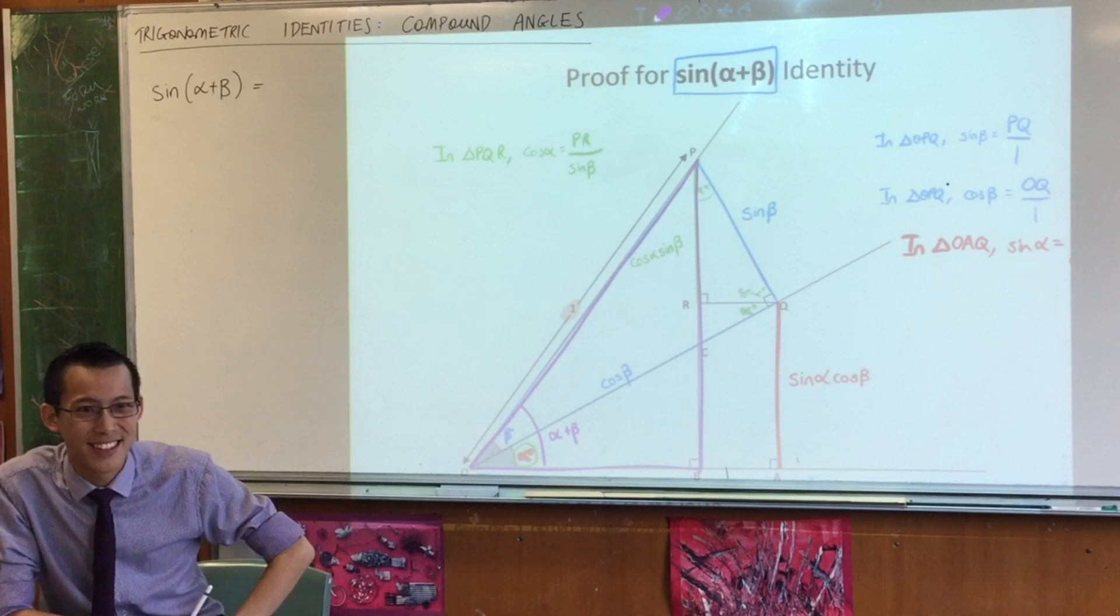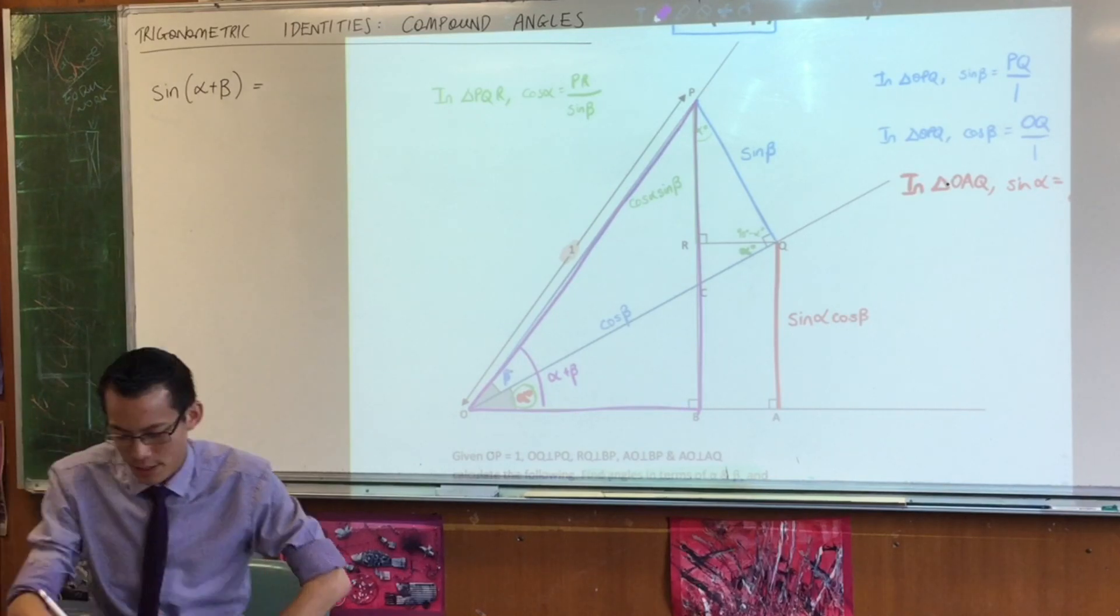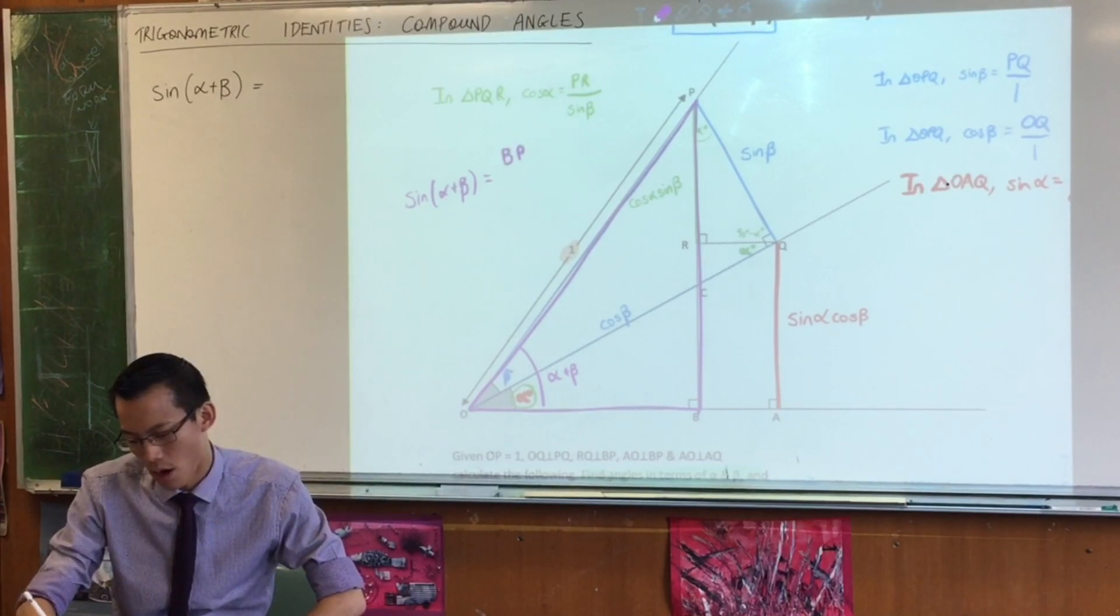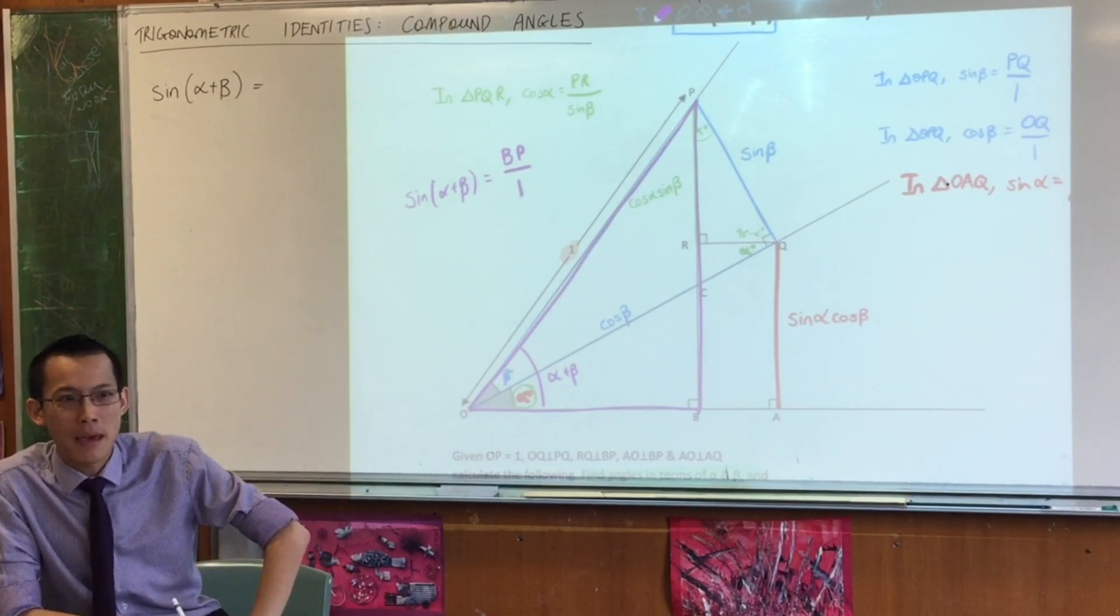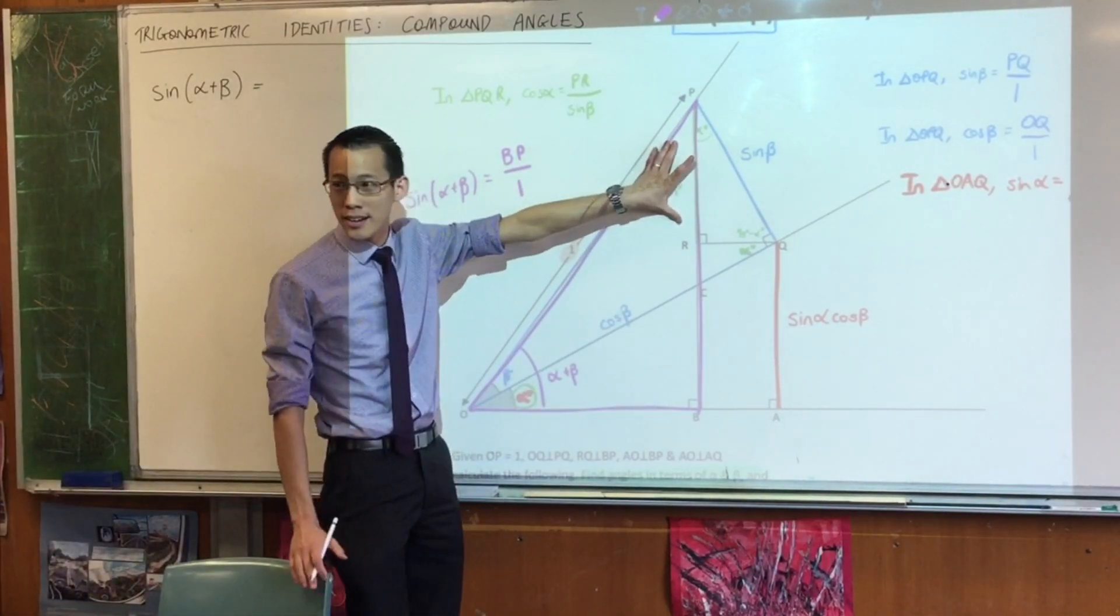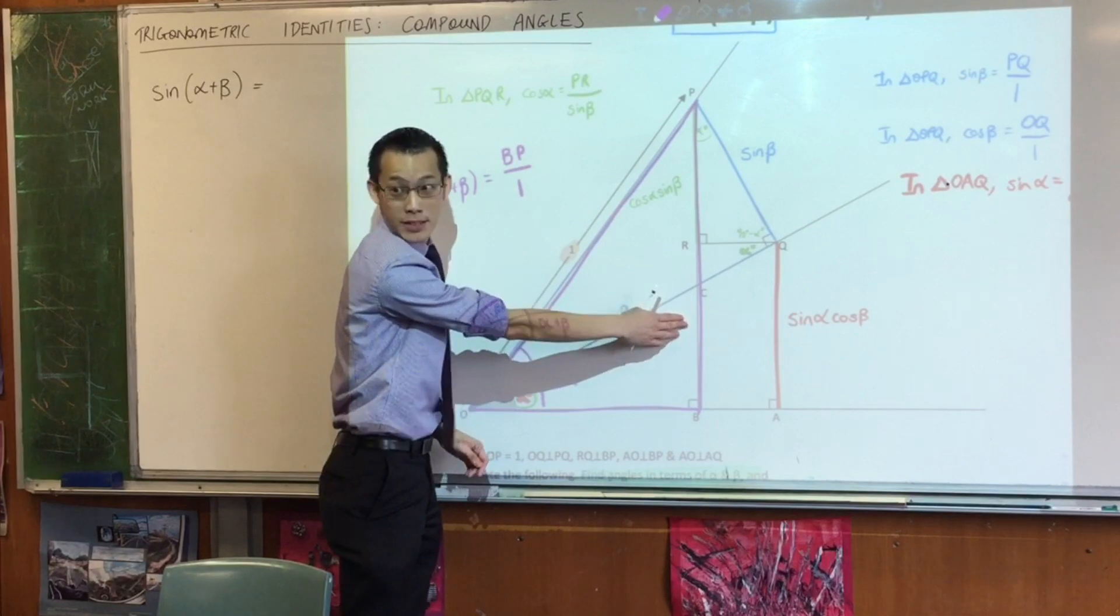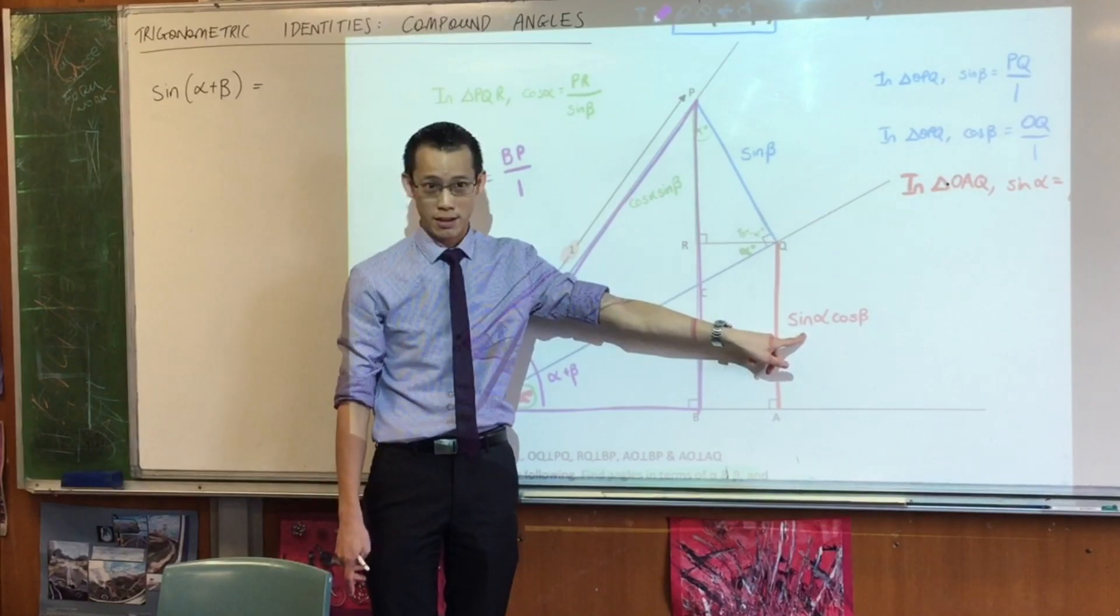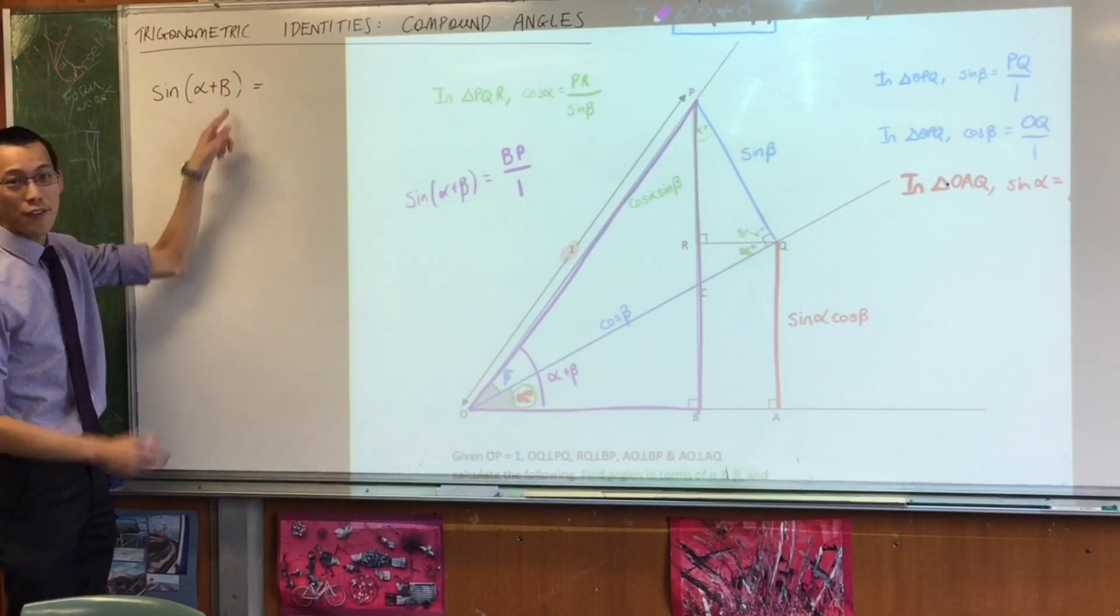So, what is sine of alpha plus beta in this triangle? What does it give you? Which length is it? It's going to be BP. BP, right? Sine of alpha plus beta is opposite, that's this guy, on hypotenuse, which is one. So, all I really need is BP, but you can see what BP is, can't you, right? You've got cos alpha sine beta here, and because it's a nicely done diagram and you can see all these right angles, this sine alpha cos beta is the same length over here. Does that make sense? So, this whole length you're after BP is this green plus this red. Are you okay with that? So, let's write that as a summary, right down to the bottom.